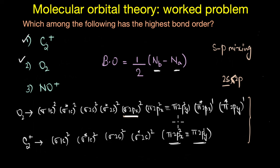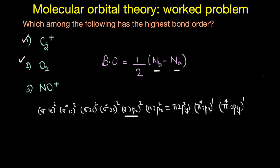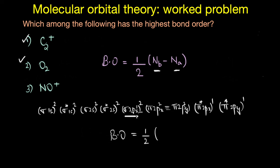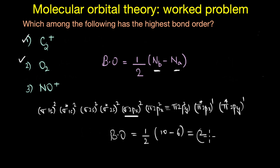Based on the electronic configuration of O2, the bond order equals half of: bonding orbital electrons (1+2+3+4+5 = 10) minus anti-bonding orbital electrons (2+2+4 = 6), which gives a bond order of 2.